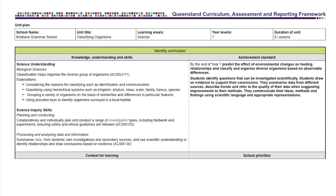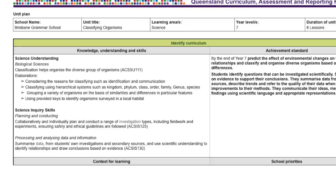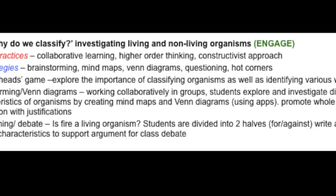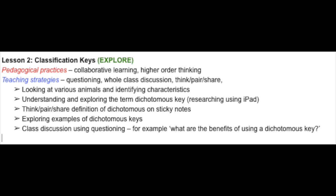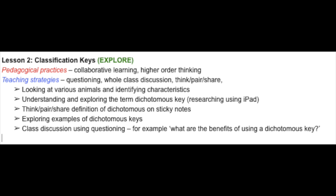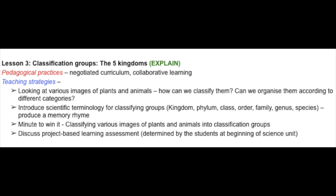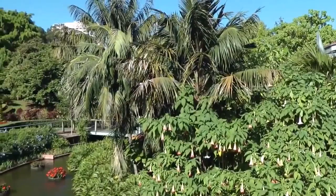Within the unit, students develop knowledge, understanding and skills based around the biological science strand of classification of organisms. In Lesson 1 of the Engage stage, students investigate why we classify things and identify characteristics of living and non-living organisms. The Explore stage in Lesson 2 involves the exploration of how we classify using scientific terms through collaborative learning and discussion. Lesson 3, the Explain stage, explicitly introduces scientific terminology for classifying organisms through various activities, as well as discussing the excursion to a local habitat.